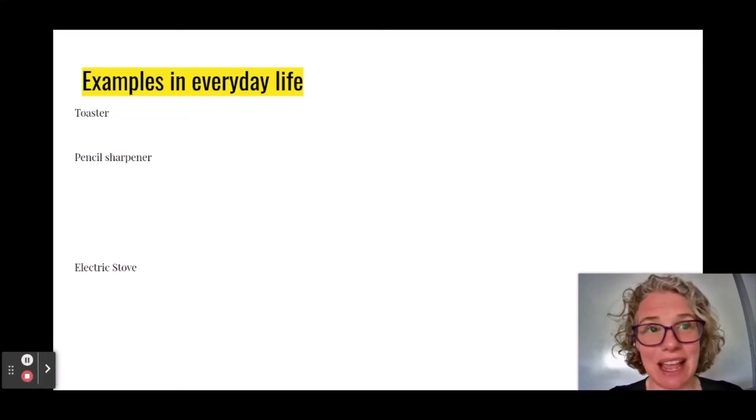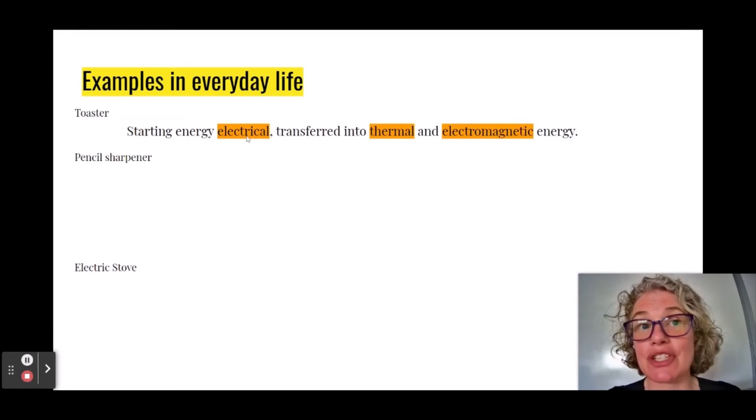A toaster, for example, is going to start with electrical energy coming in through the plug. And that electrical energy is going to be transferred into two different things. Thermal energy, it's going to get hot. And if you've ever looked inside a toaster, those little bars, they actually glow. And since we can see glowing, we know there must be electromagnetic energy in the form of visible light coming from a toaster.